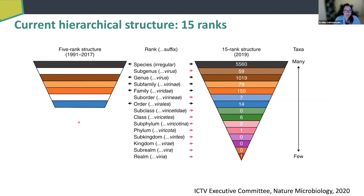So what's the framework we can work in at the moment? Ever since 2019 we have a 15-rank structure to divide the virus sphere. Before that we had five ranks — species, genus, subfamily, family, and order. We've extended that to start at the highest level, which is relatively comparable to Baltimore groups, at the realm. So we have realm, kingdom, phylum, class, order, and sub-classifications available if needed. In 2019 we had 5,560 species divided into 1,000 genera, 79 subfamilies, and 150 families, but at the time we only had one realm, and we've extended that since.